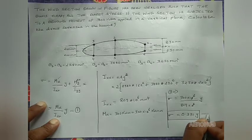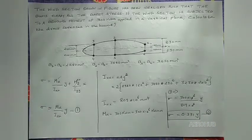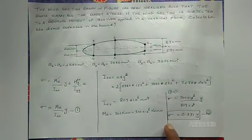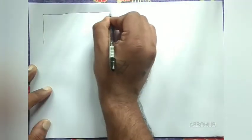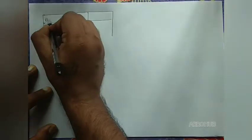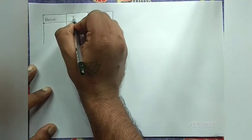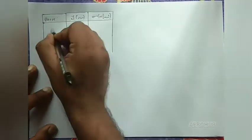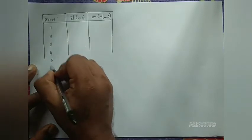This is the equation for bending stress across the entire section. Now we calculate the bending stress for each boom area one to six. We draw a table with columns for boom number, y distance (in mm), and sigma (in N/mm²), listing boom numbers one through six.